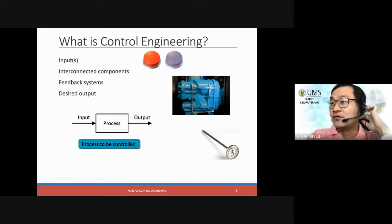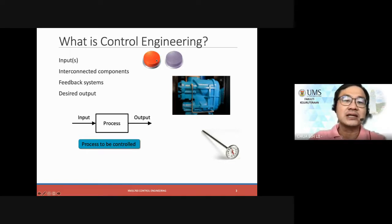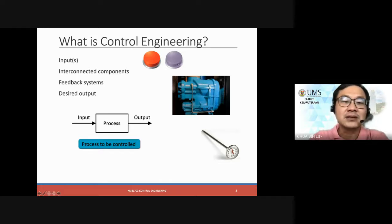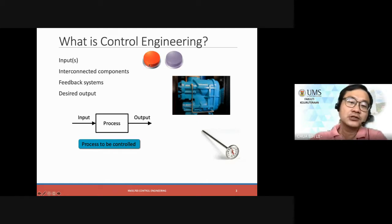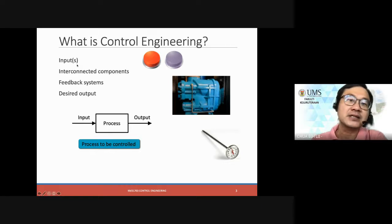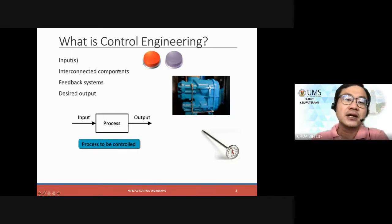So first of all, what is Control Engineering? It can be as simple as two buttons — you just press the red button or a purple color button to turn on or turn off a certain machine. So these buttons become our input — a very direct input. I press a button, that would be the user input to give an instruction to a machine. And these machines we call an interconnected component — internally they may have a valve, a control valve, motors, or whatever it is.